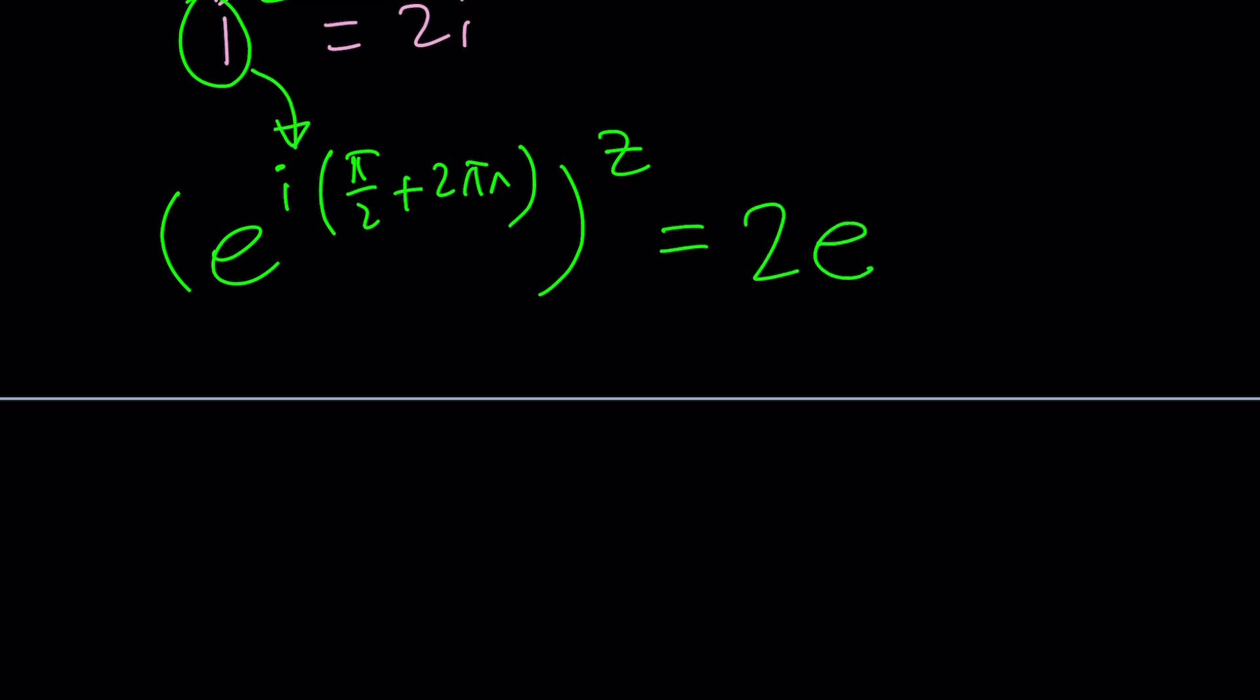it's going to equal 2i. And 2i can be written as 2 times e to the power i times pi over 2 again. But instead of writing pi over 2, I can also write pi over 2 plus multiples of 2 pi. Right?